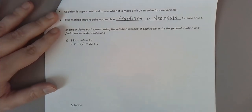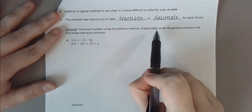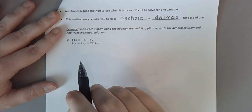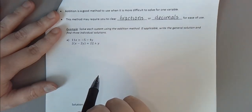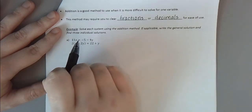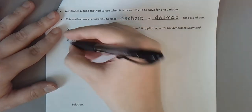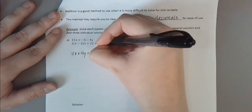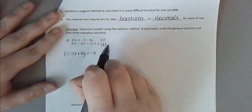Let's look at the first example. We want to solve using the addition method, and where applicable write the general solution and three individual solutions. First, we take both equations and write them in standard form — variable terms on the same side, constant on the other. The first equation can be put in standard form in one step: add 4y to both sides, giving 11x plus 4y equals negative 5. Let's label this as equation one.